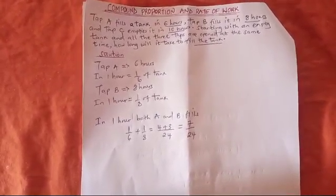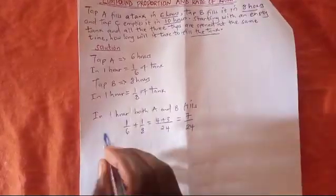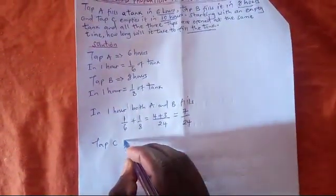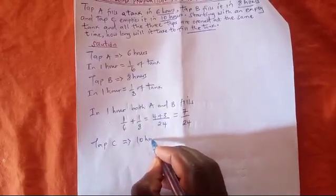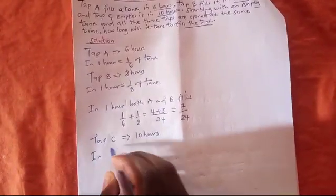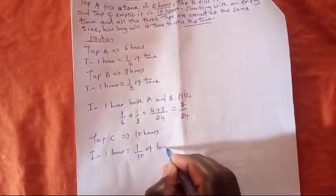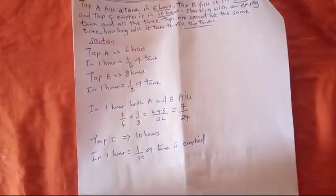Now, what about Tap C? Tap C empties the tank in ten hours. So what fraction is emptied in one hour? In one hour, one over ten of the tank is emptied.